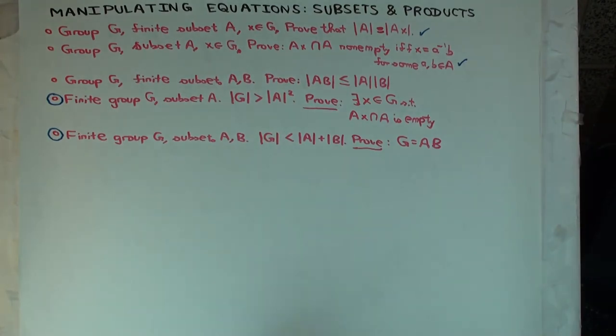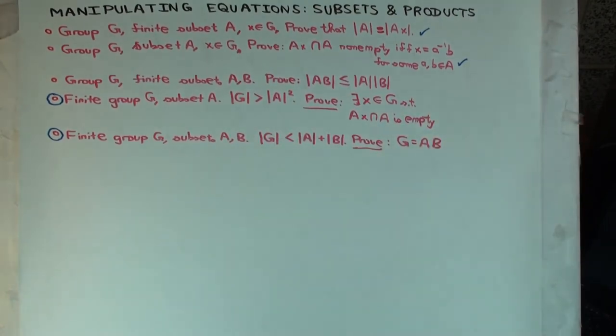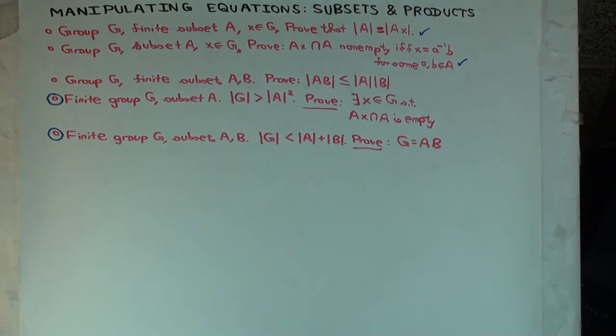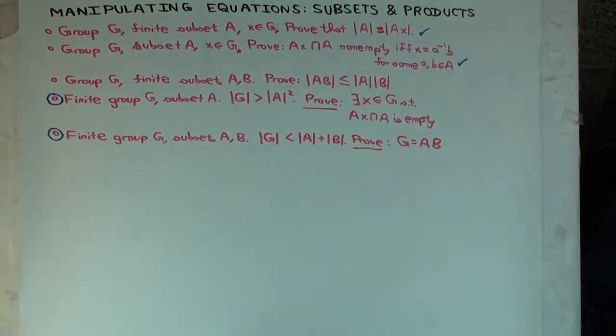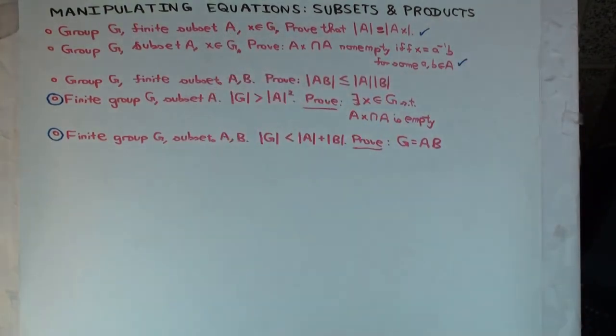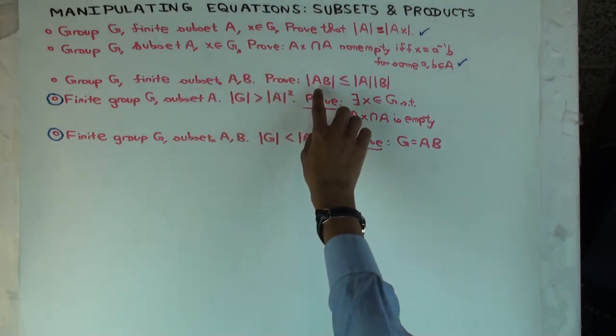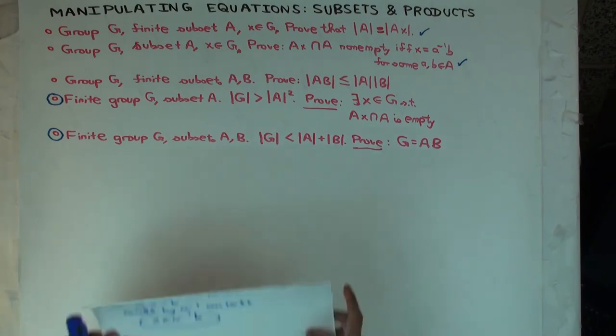Next one. You have a group. So by the way, I keep talking of finite subsets. I'll just talk of finite so that if you haven't seen the concept of size for infinite sets, there's lots of subtleties. So the next one, you have a group and you have two finite subsets. Maybe they're the same, they could be equal. And you want to show that the size of the product of the subset is less than or equal to the product of the sizes. Now, what is the product of two subsets defined as? How is AB defined?